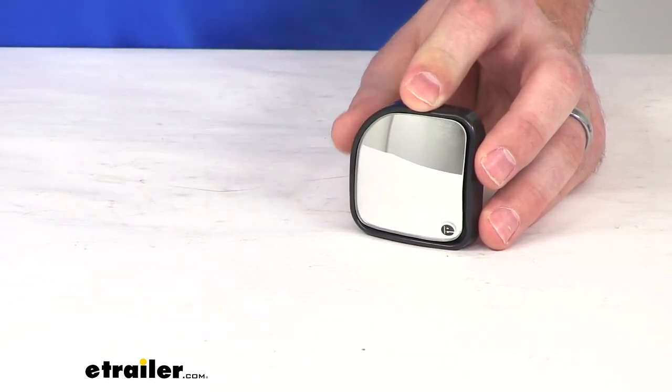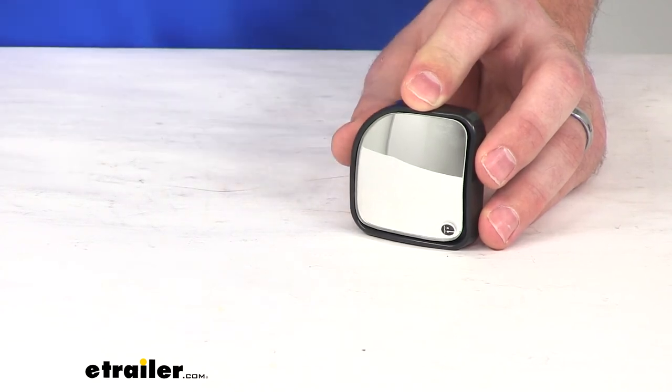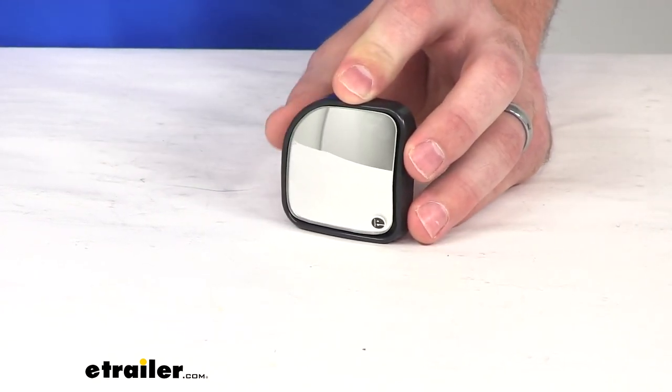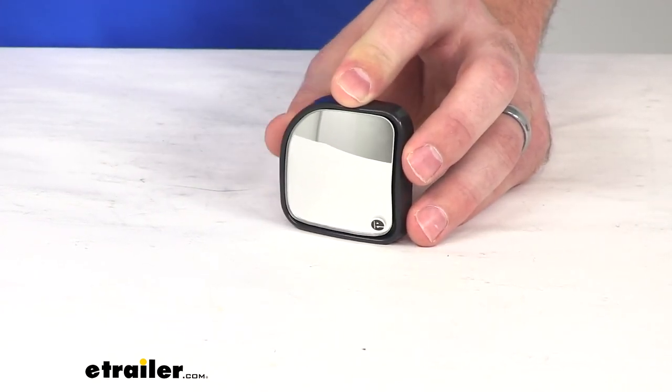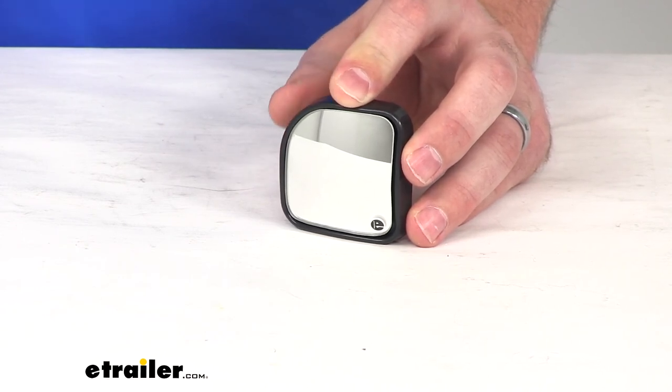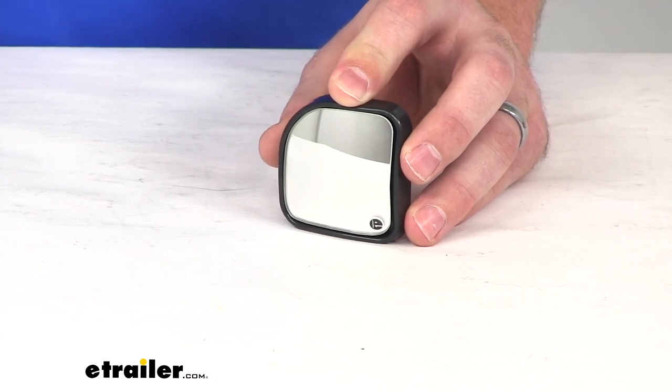So it's a very inexpensive, quick, easy way to get those blind spots brought down to a minimum so you can feel safer and enjoy your trip more. Let's go and complete our look at the CIPA wedge shaped hotspot mirror. Thanks for watching.